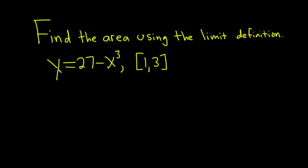Hello, in this problem we're going to find the area using the limit definition. Our function is y equals 27 minus x cubed and we're going to find the area under the graph from 1 to 3.